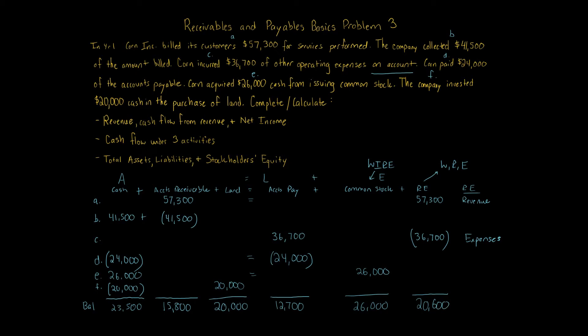Now we can determine all the required items from the accounting equation. For revenue, we're asked about the revenue amount. It's $57,300 — that's the only revenue item in this problem, so revenue equals $57,300.